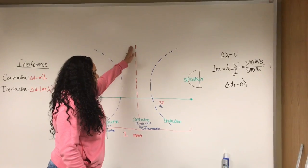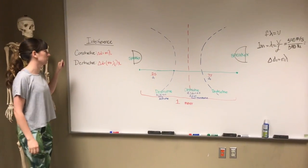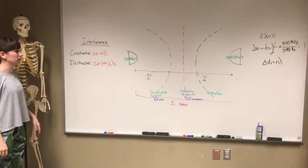And again, the constructive is always going to be a straight line. Alright, so I'm going to explain the different equations that we use for the interference patterns.